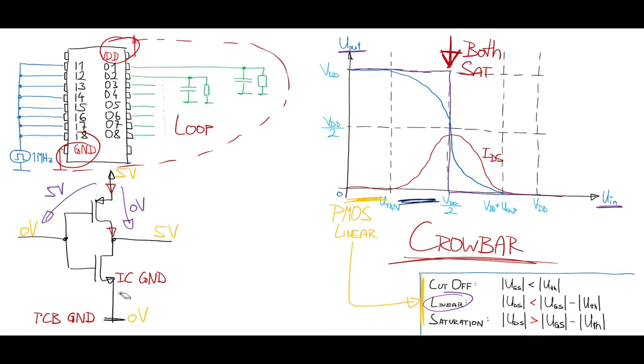So we can draw in here an inductance. Now when the crowbar current is flowing, there will be a voltage drop over this inductance according to L times dI over dt. So the IC ground isn't equal to the PCB ground anymore and that's not good.